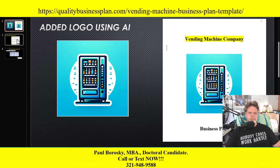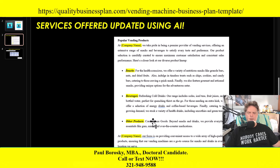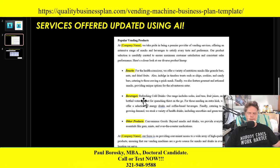The next update I made was adding more content to the products and services section. Previously, I just had snacks, beverages, and other products, and allowed you to add your own information. This year I've added a nice introductory paragraph and a conclusion paragraph. Keep in mind this is a completely editable document, so feel free to make changes as you see fit — but it gives you a solid foundation for your vending products to expand upon and customize.